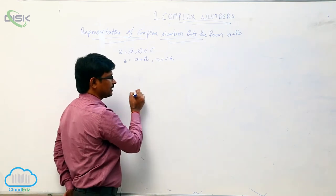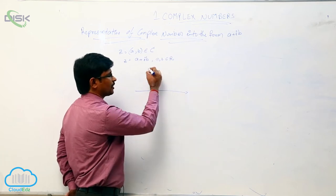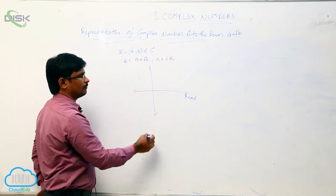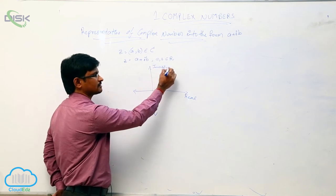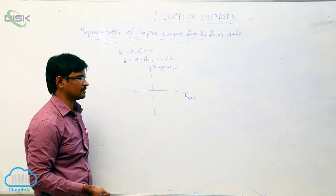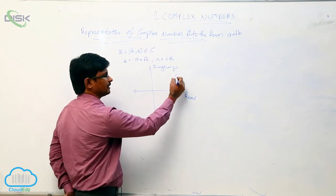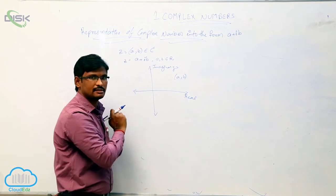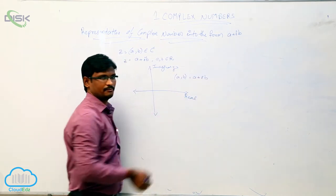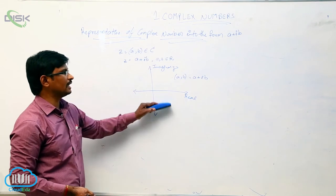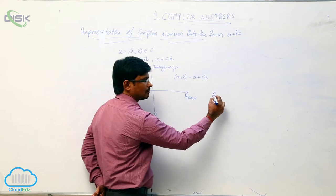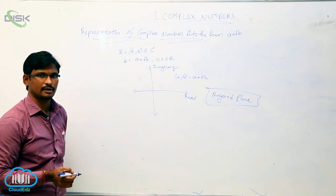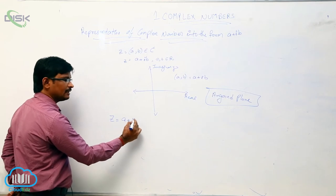Now if we draw one horizontal line and one vertical line, this horizontal line is denoted as the real axis and the vertical line is called the imaginary axis. If you take any ordered pair (a, b), a is the real number and b is the imaginary number, written as a plus ib. The plane which contains the real and imaginary axes is called the Argand plane.